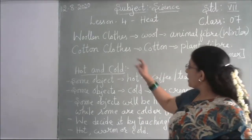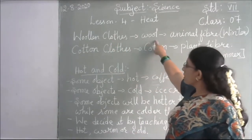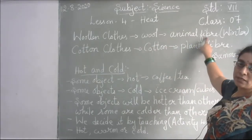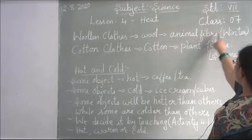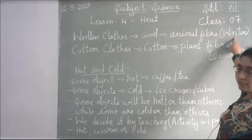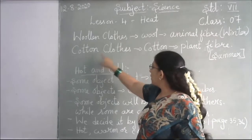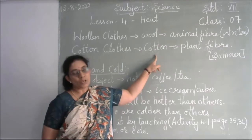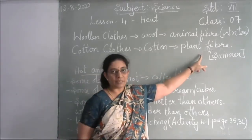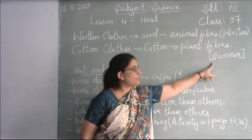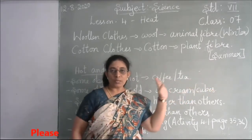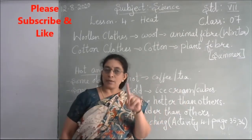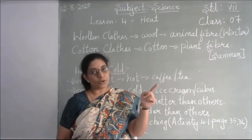So to summarize: woolen clothes are made from wool, which is an animal fiber, and are used only during winter. Cotton clothes come from cotton, which is a plant fiber, and are used during summer. Mainly we use two types of clothes — woolen clothes for winter and cotton clothes for summer.